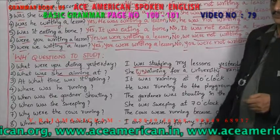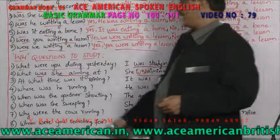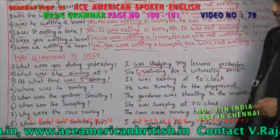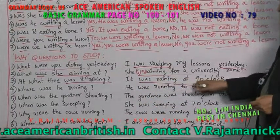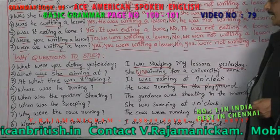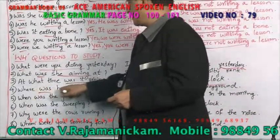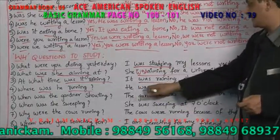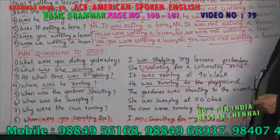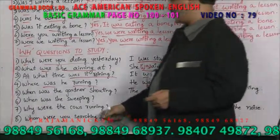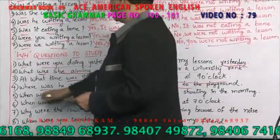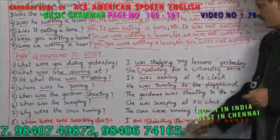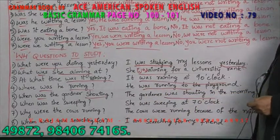At what time was it raining? The answer in past continuous: It was raining at nine o'clock. Where was he running? He was running to the playground. When was the gardener shouting? The gardener was shouting in the morning. When was she sweeping? She was sweeping at seven o'clock.